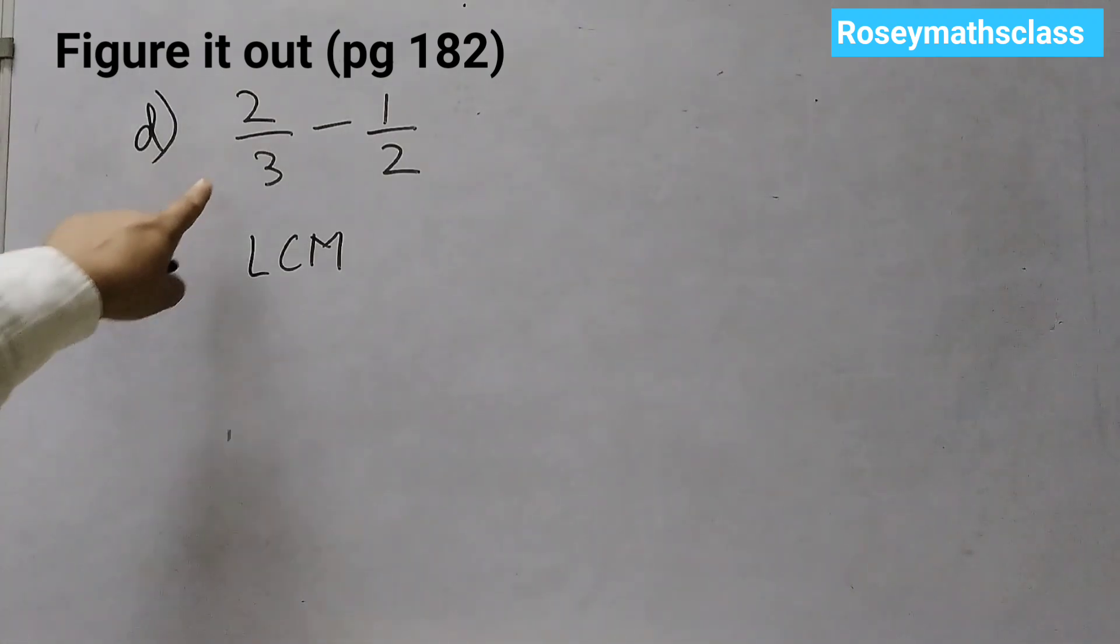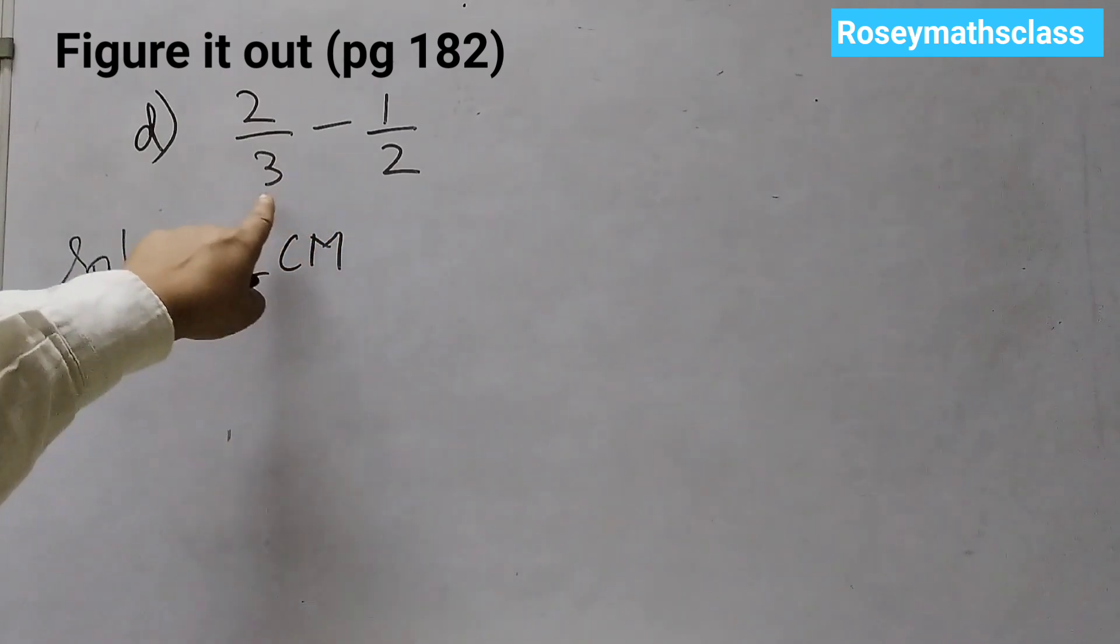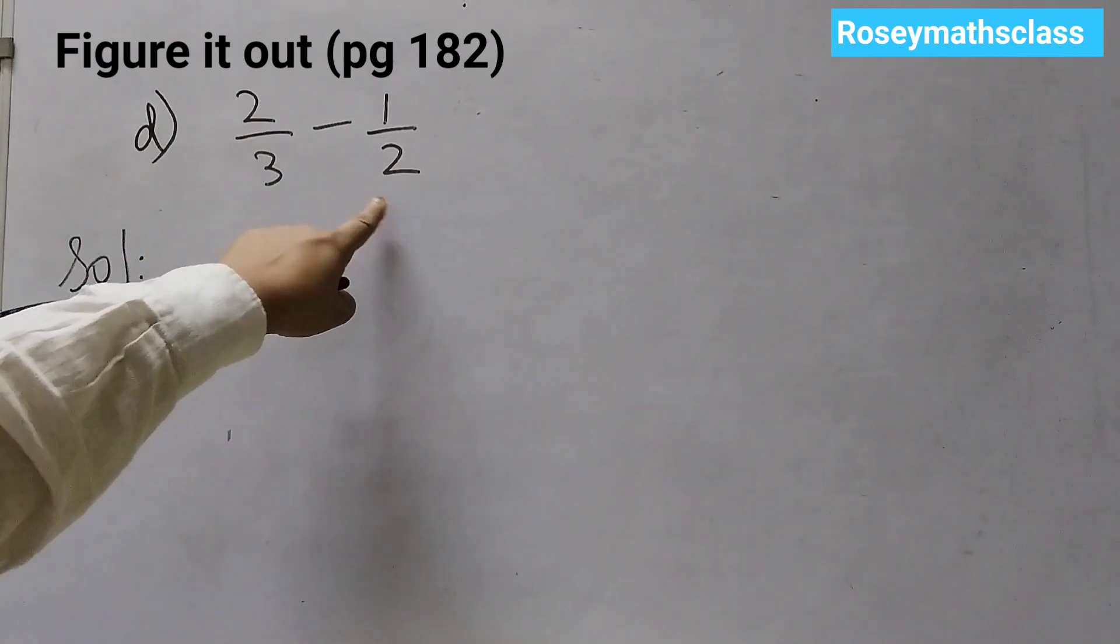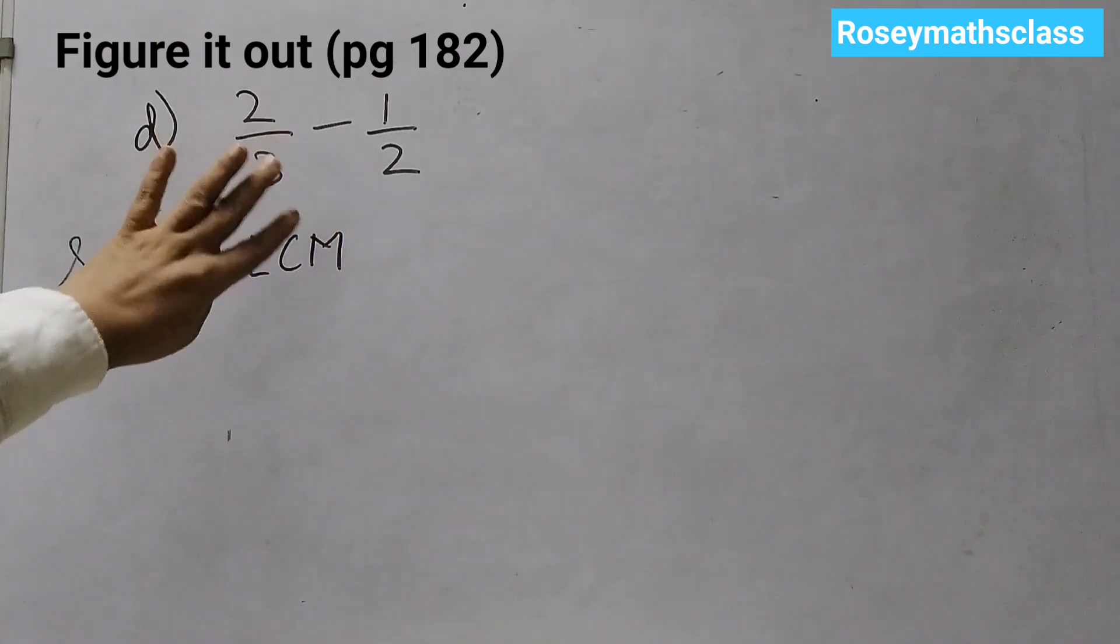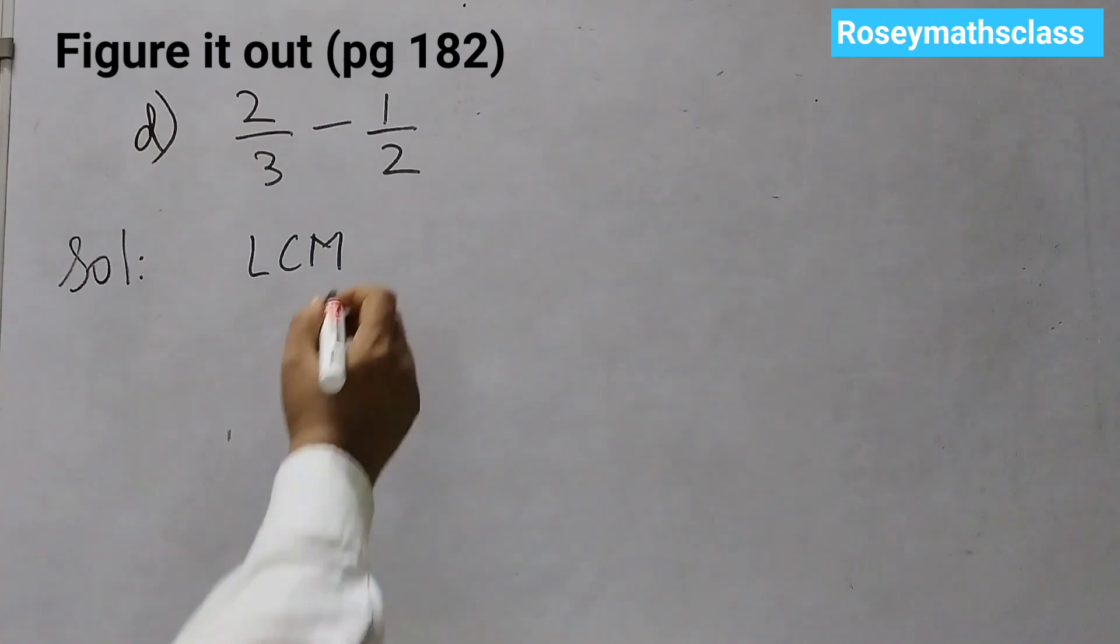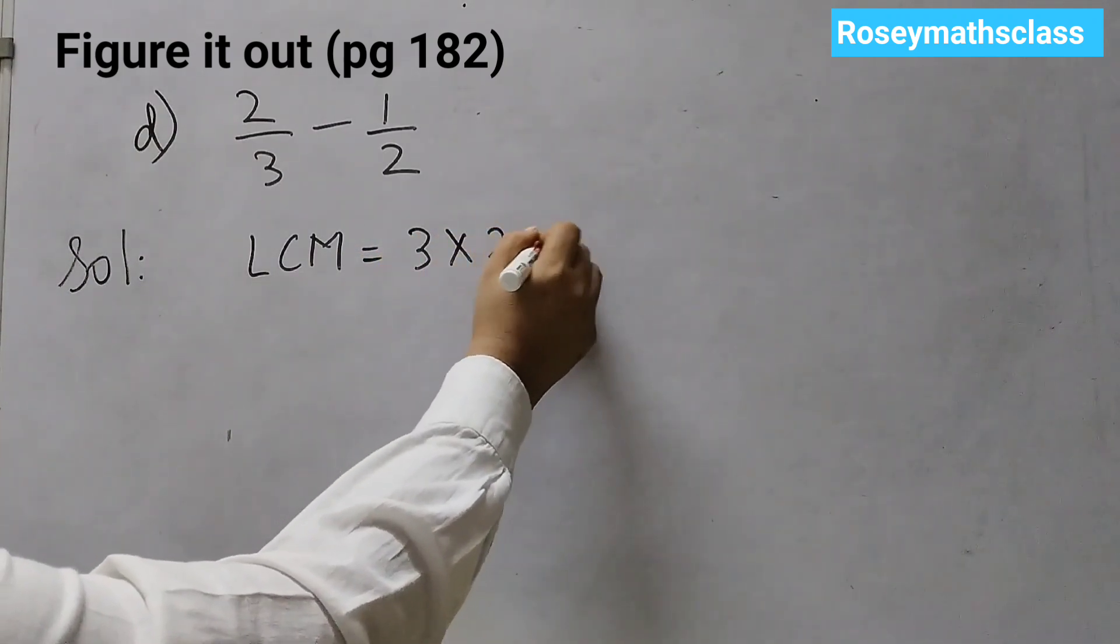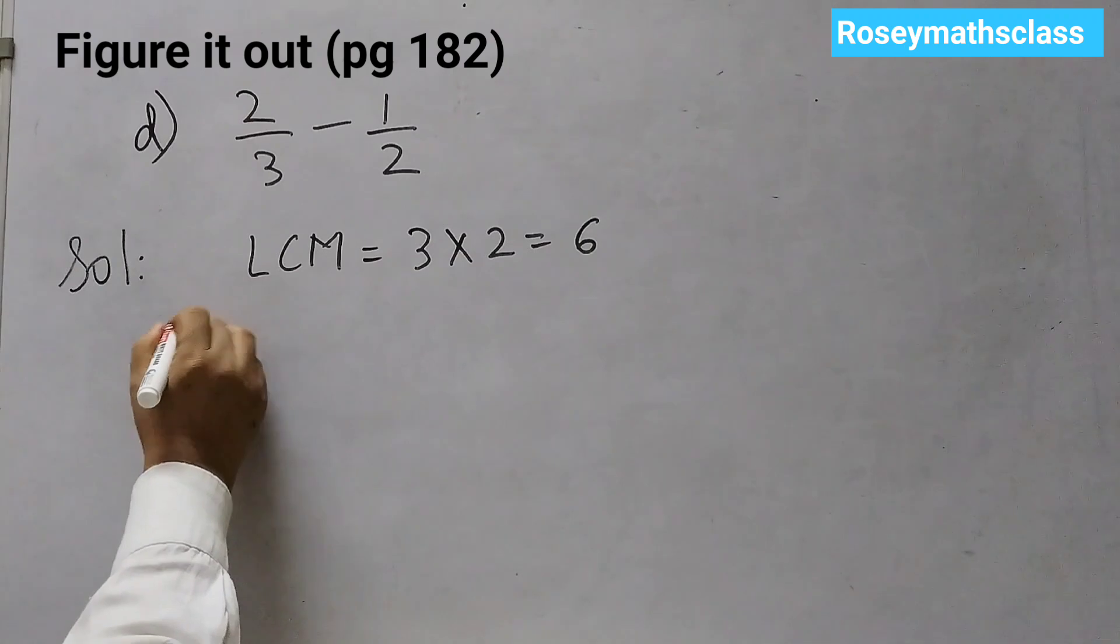The last problem is 2 by 3 minus 1 by 2. 3 and 2 are different numbers and they are not multiples of each other or they are not factors. So we will just multiply by 3 and 2. That is 6. 6 is the LCM.